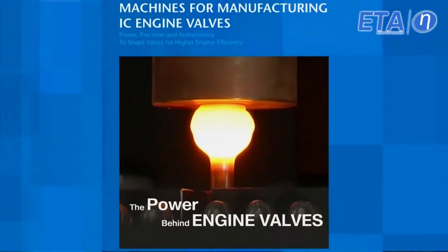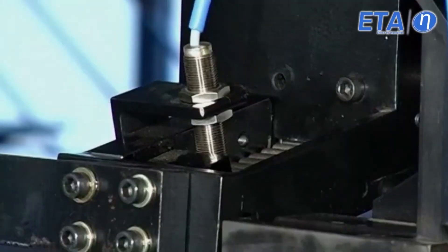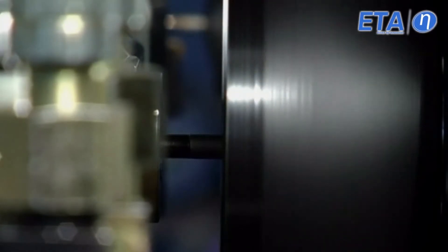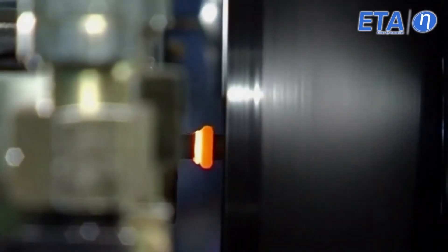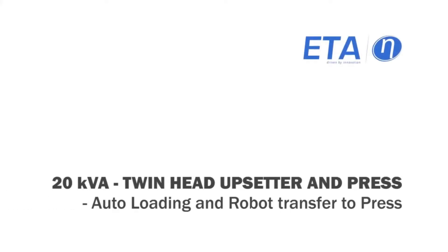ETA supplies a variety of machines for making engine valves. ETA offers friction welding machines in different capacities for welding engine valves, for head to pin or pin to pin, and for sodium-filled valves configurations. 20 kVA twin head upsetter and press.